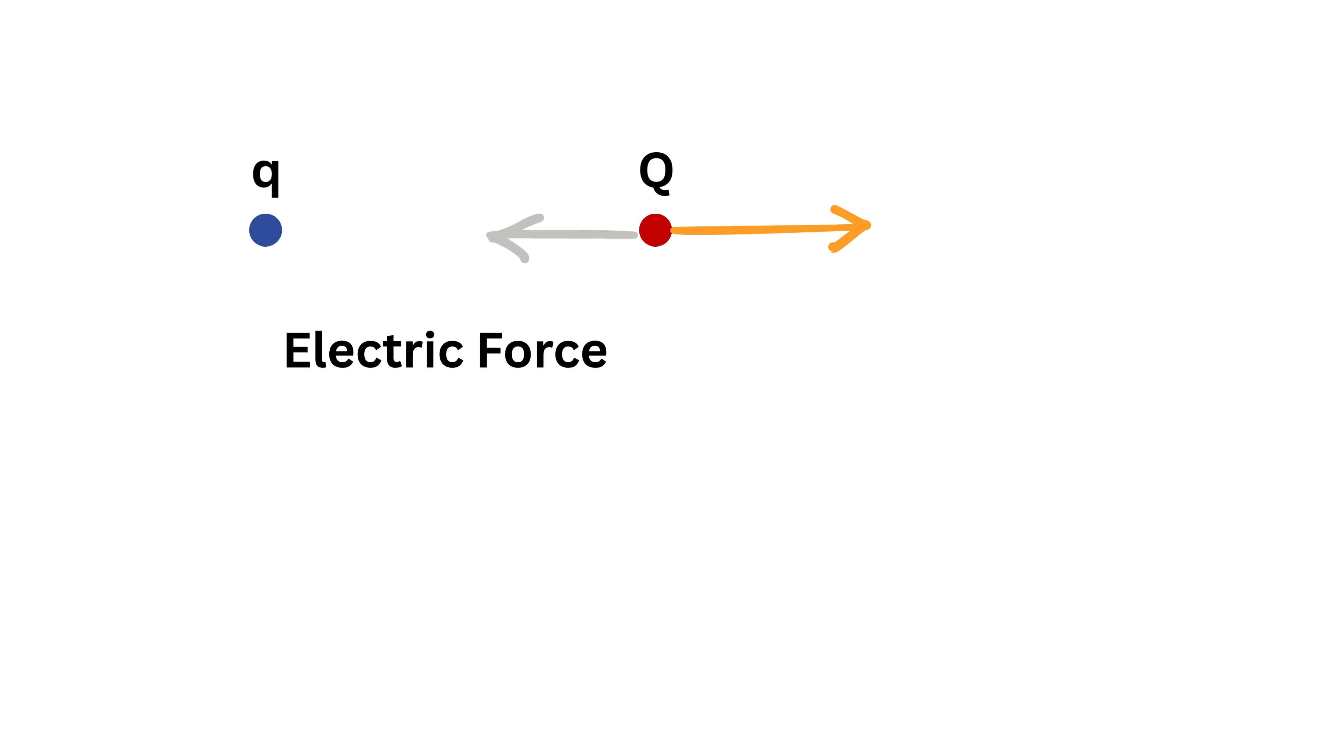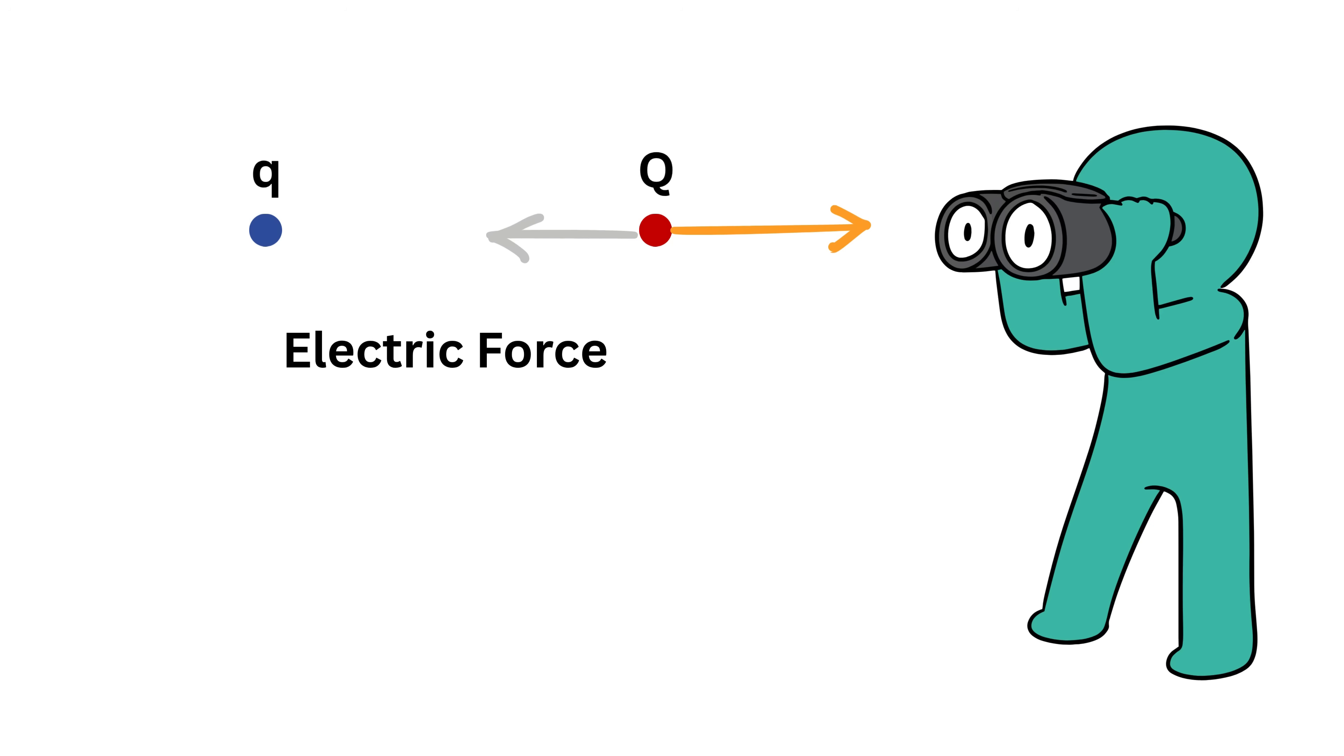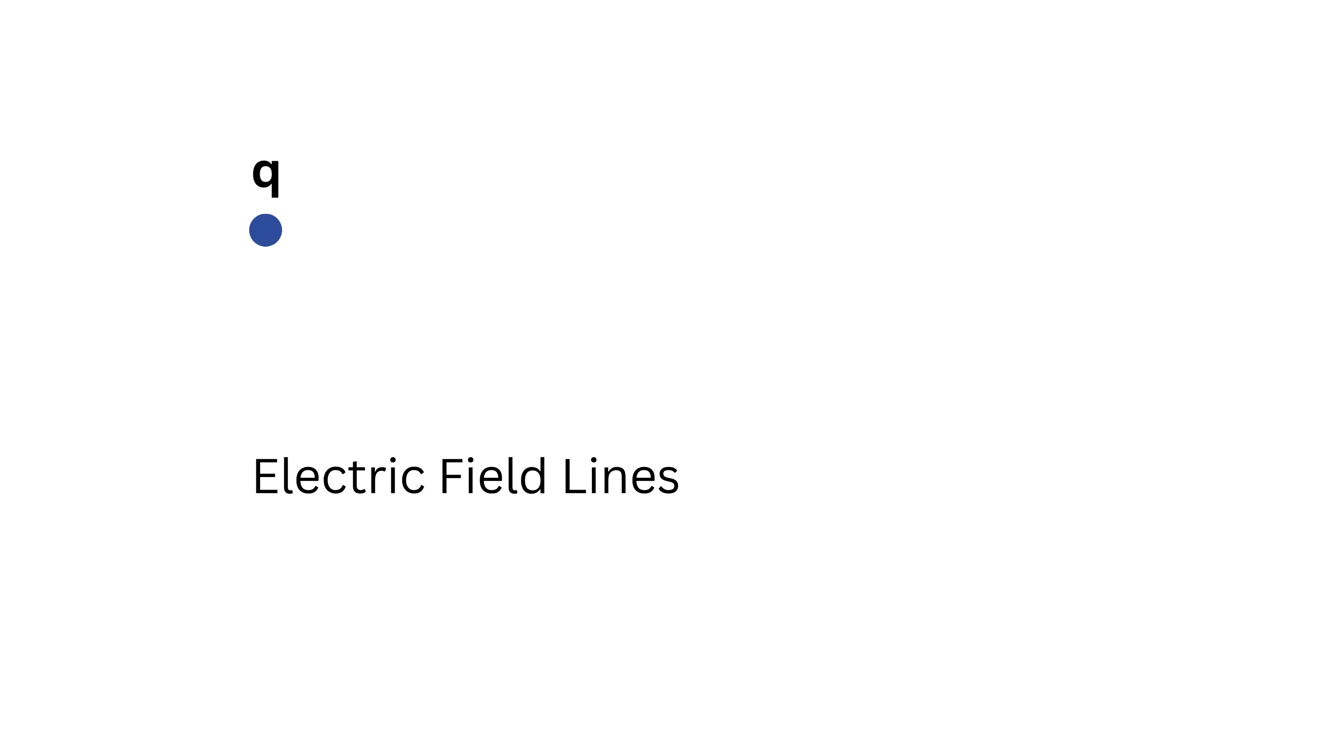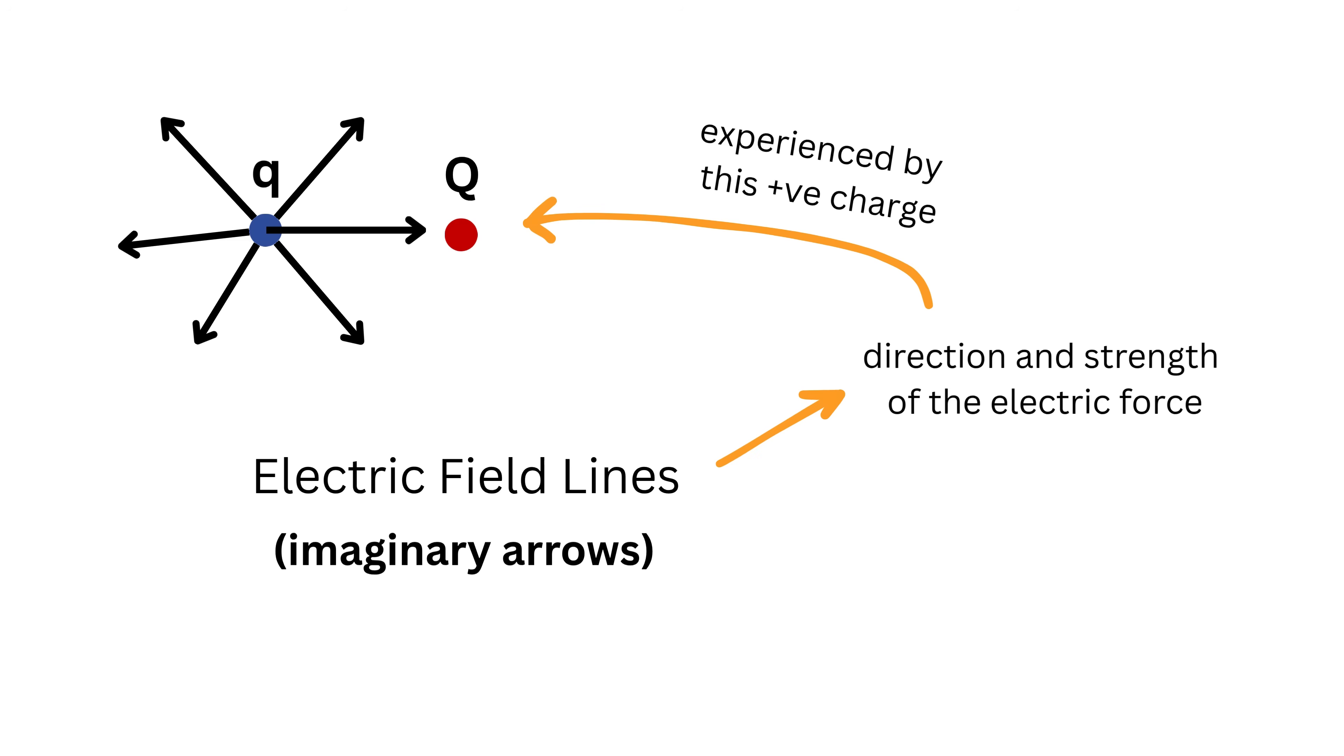But how do we see or imagine that invisible influence? That's where electric field lines come in. Electric field lines are like imaginary arrows we draw in space to show the direction and strength of the electric force that a positive test charge would feel if placed there.